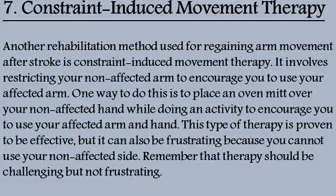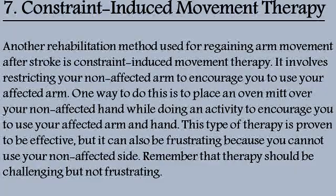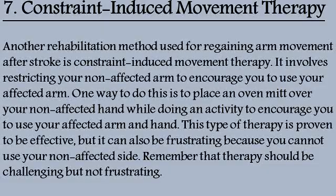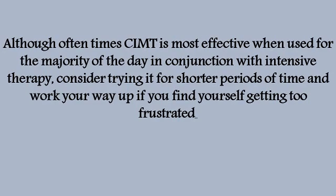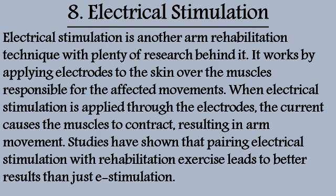Method 7: Constraint Induced Movement Therapy (CIMT). Another rehabilitation method for regaining arm movement after stroke is constraint induced movement therapy. It involves restricting your non-affected arm to encourage you to use your affected arm. One way to do this is to place an oven mitt over your non-affected hand while doing an activity. This therapy is proven to be effective, but can be frustrating. Although CIMT is most effective when used for the majority of the day in conjunction with intensive therapy, consider trying it for shorter periods and work your way up if you find yourself getting too frustrated.